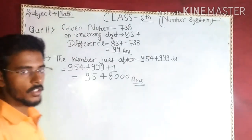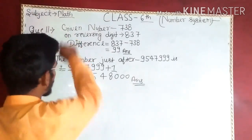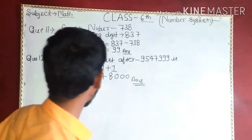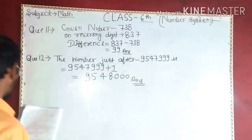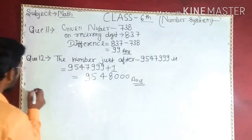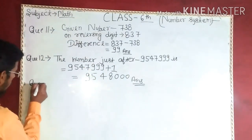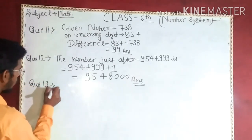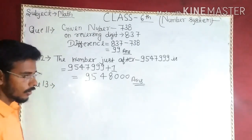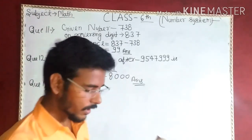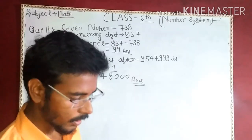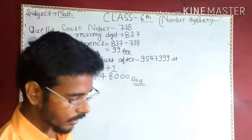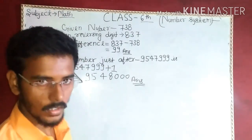So this is question number 12 and this is question number 11. Now I am going to tell you question number 13, which is saying what comes just after 9 double-9 and this.